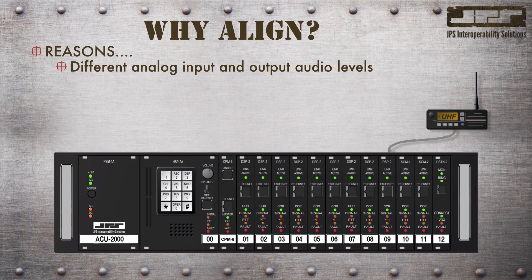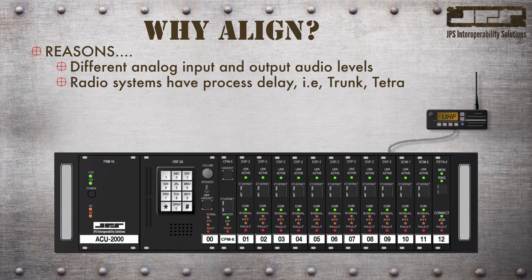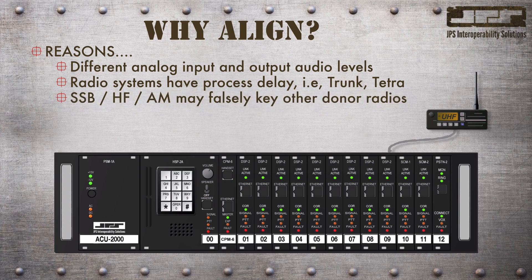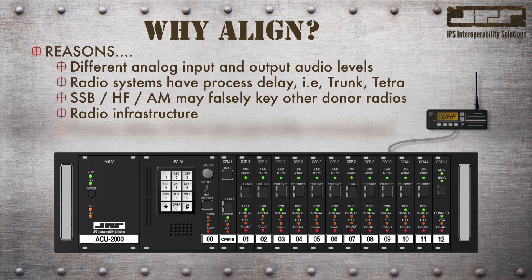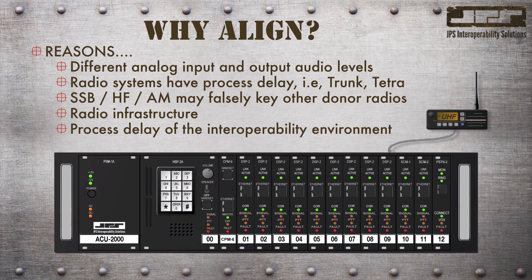Some radio systems have complex processes that slow the radio's reaction time through the gateway. The resulting shared communications might exhibit the loss of the first few syllables of a transmission due to process delay. Some single sideband, HF, and amplitude-modulated radio systems are sometimes difficult to squelch and will exhibit constant receiver noise. In a cross-connection, this will cause other donor radios to be inadvertently keyed. The interaction between disparate radio environments may also cause systems to be conflicted, making them completely inoperable. Implementing digital signal processors in the ACU can alleviate many of those issues; however, the presence of a DSP inherently adds process delay, and this process is not instantaneous, sometimes resulting in the momentary loss of voice communications.